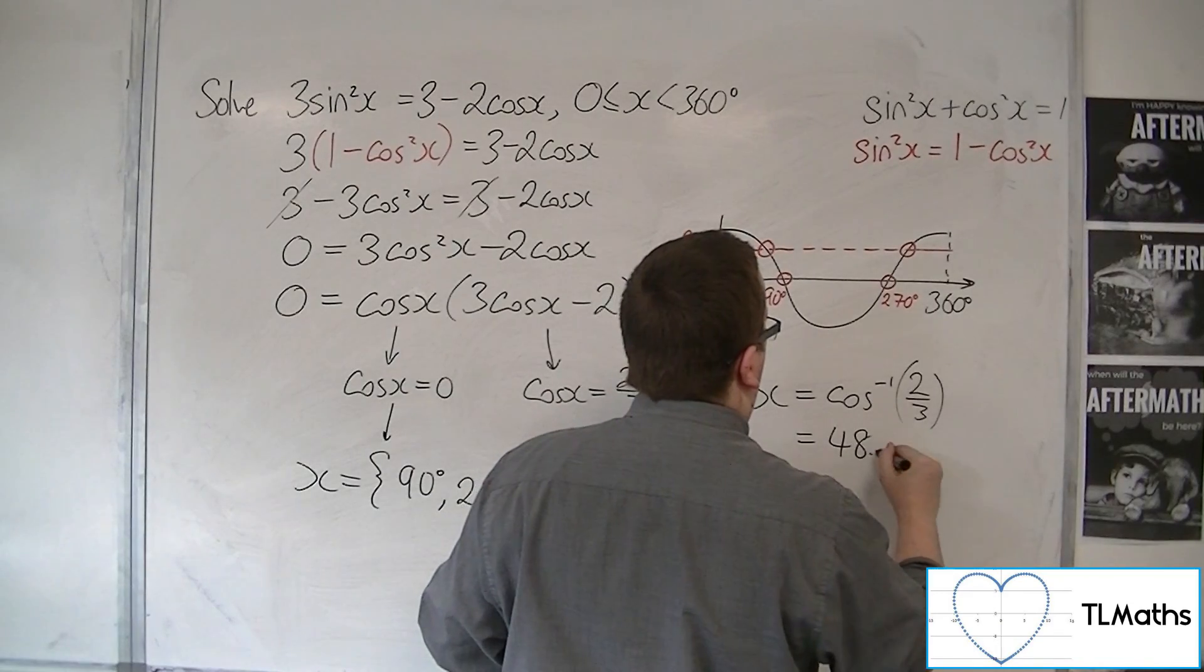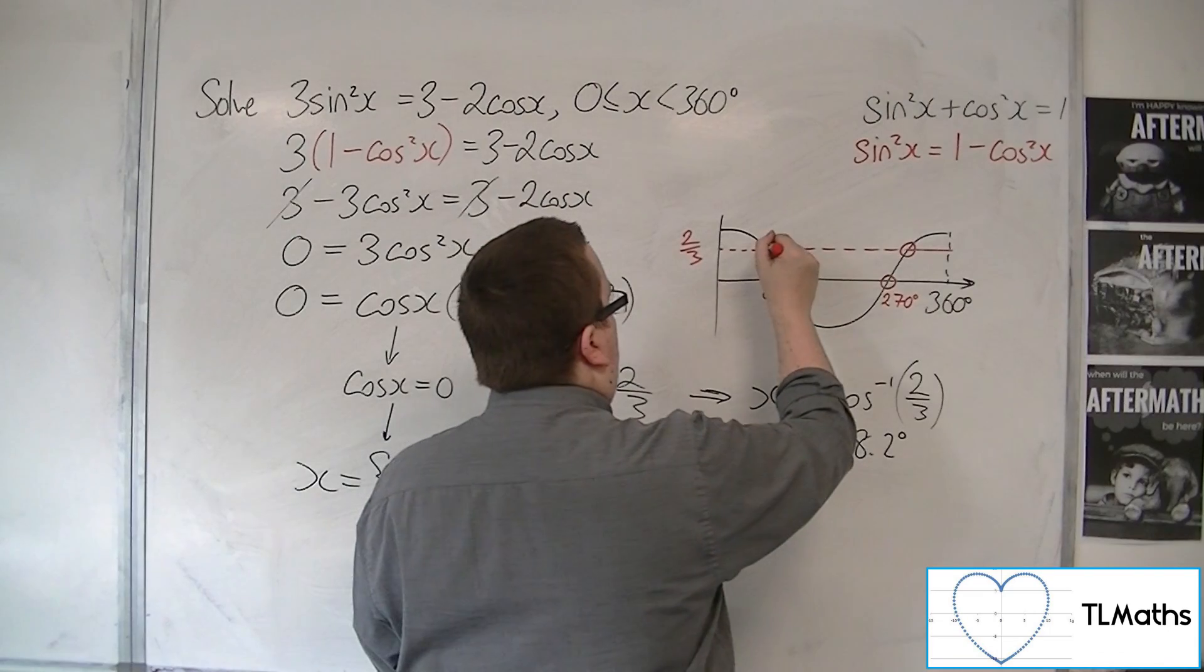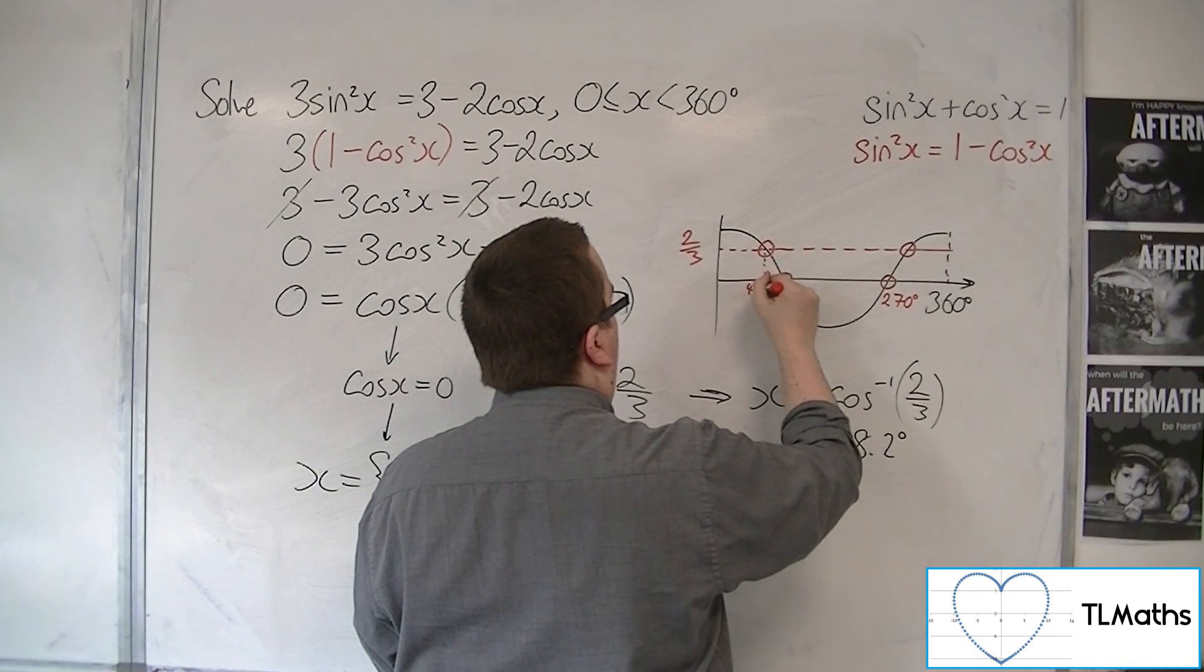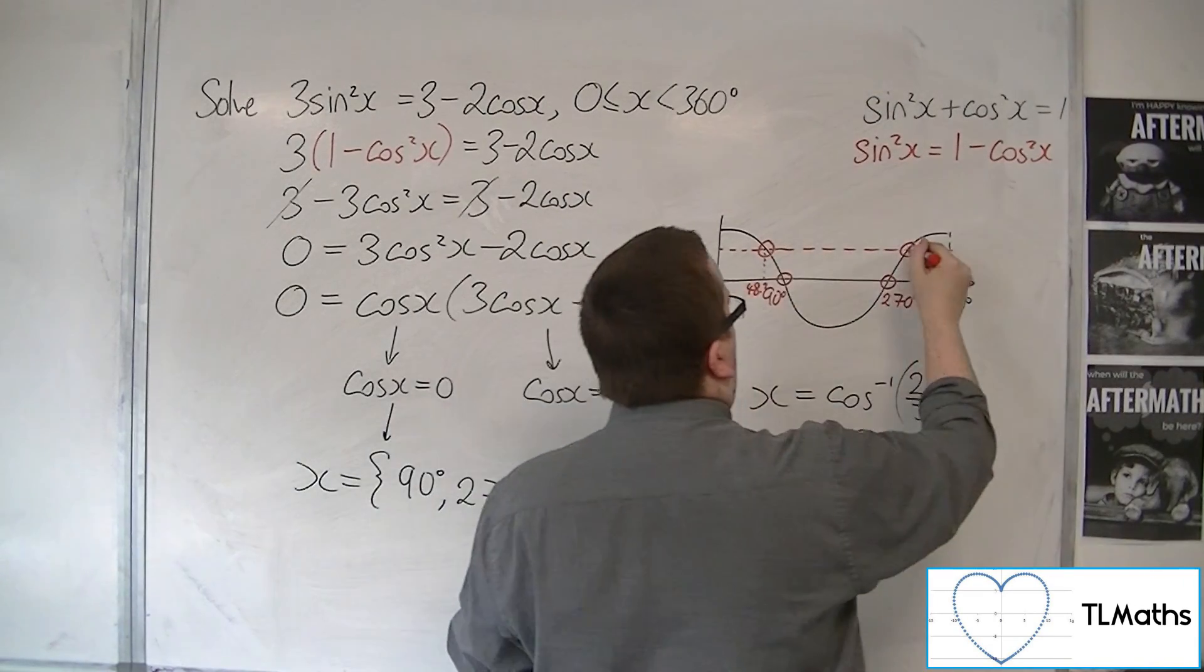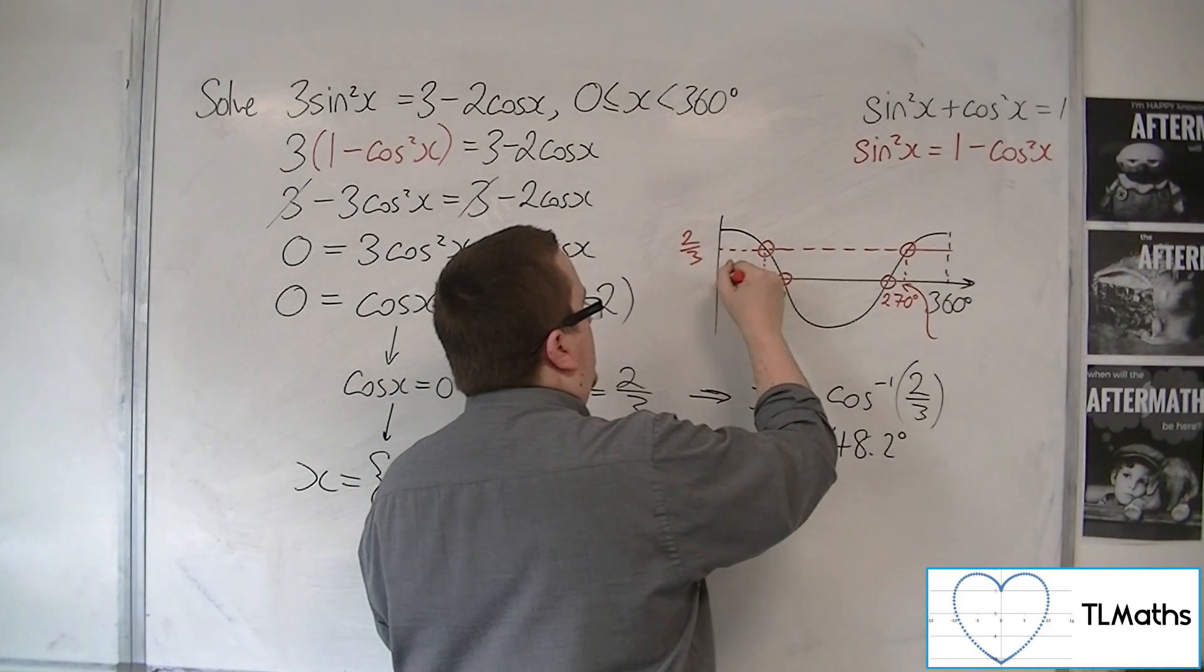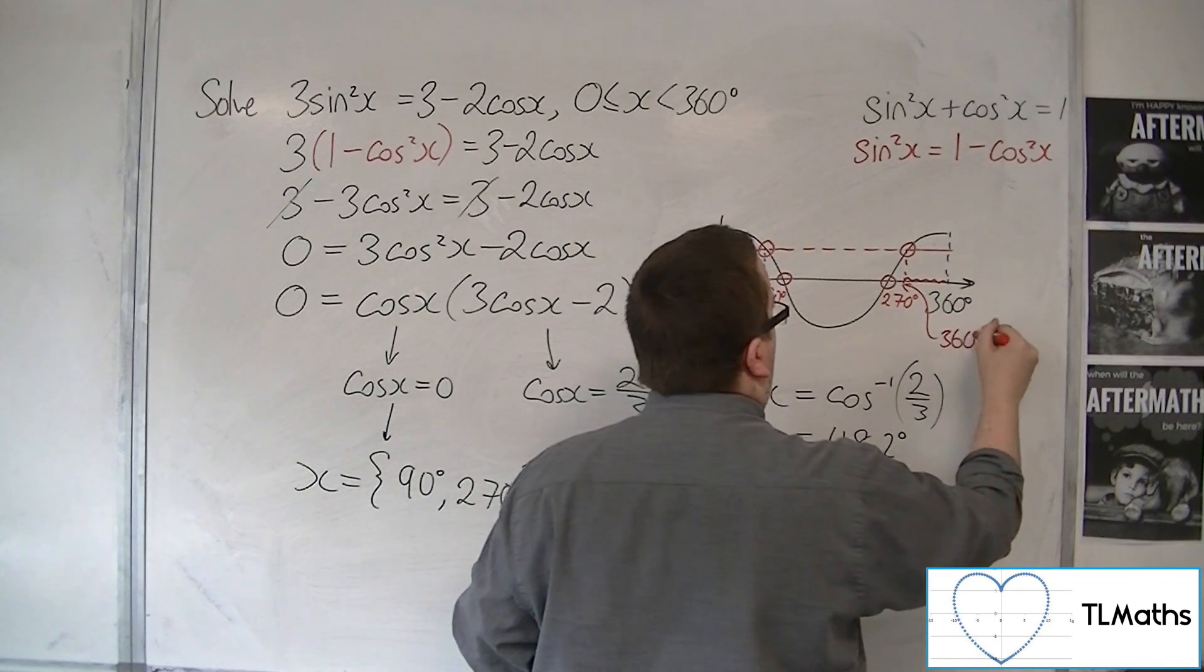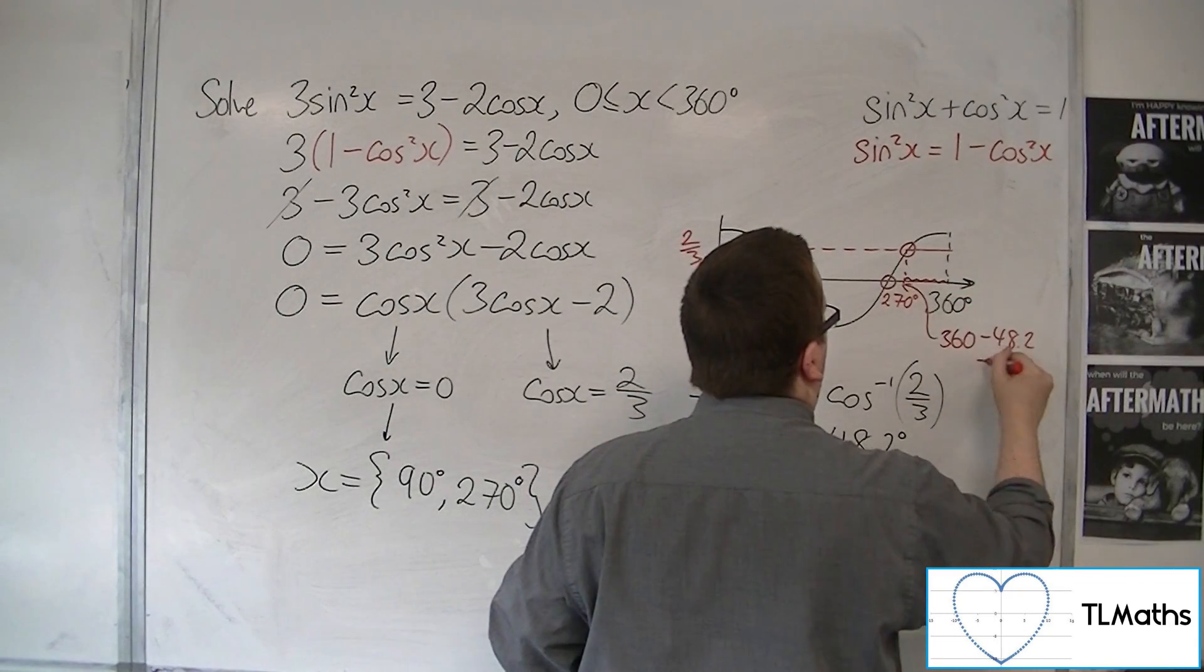So that's 48.2 to one decimal place. So that point is 48.2, and this one can be found, because if that distance is 48.2, then so is that distance. So it's 360 take away 48.2.